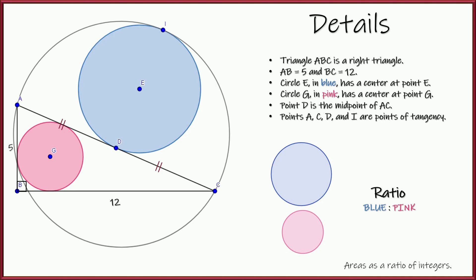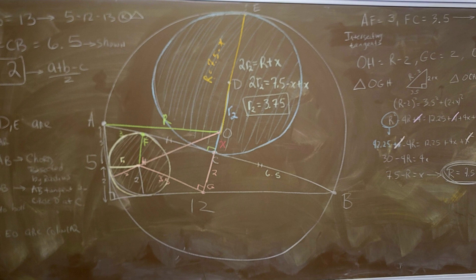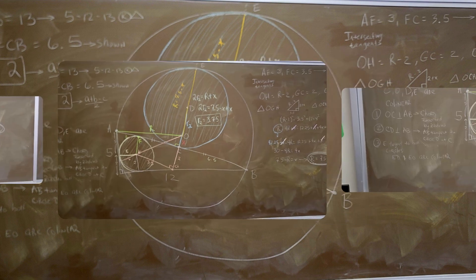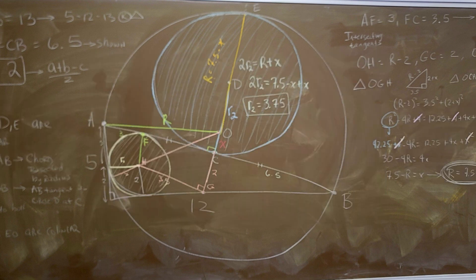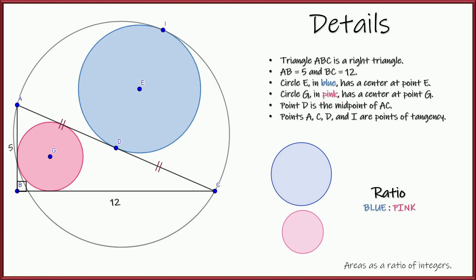And our job is to find the ratio of the areas, the blue divided by the pink circle's area, and to write our answer as a ratio of integers. So those are the details. If you'd like to try it, go ahead and pause the video now. Give it a shot. I did this one a bunch of times. I think it's a really cool problem.